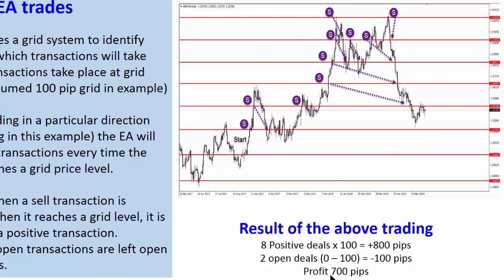Bear in mind this trader actually wanted the price to sell, and the price never sold - it never actually went positive in that direction. Yet the trader has made a nice gain of 700 pips. That's the wonder of this Grid Trend Multiplier: it cashes in many times at the same level. Multiple cash-ins at the same levels create positive results. You may want to re-watch this section of the video carefully.